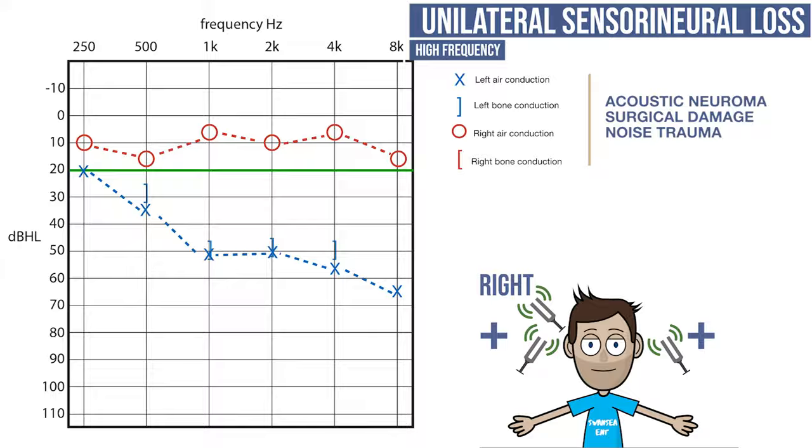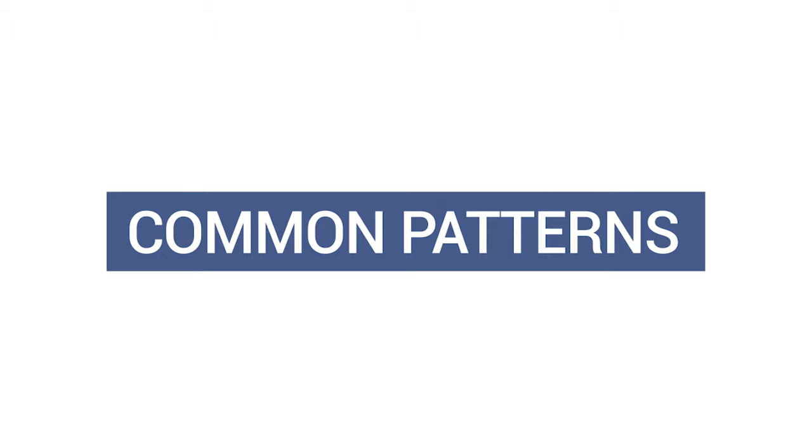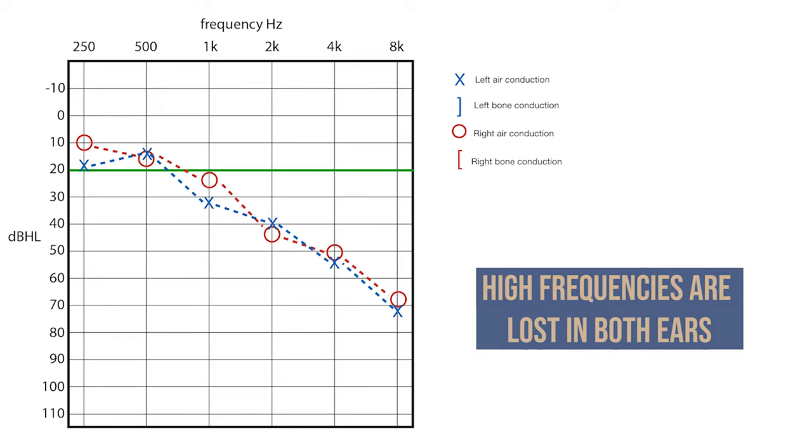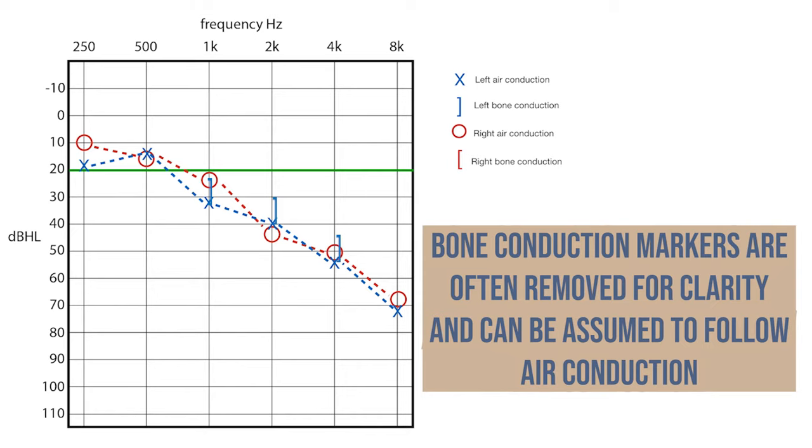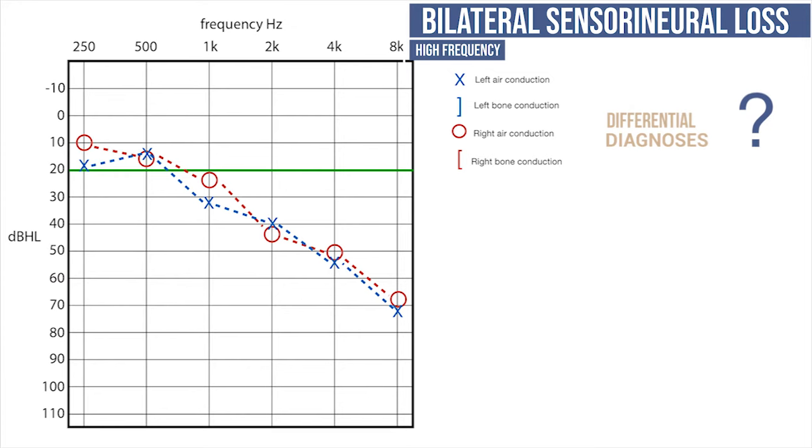Let's look at some common conditions and their audiograms, which you may be asked to interpret either on the wards, in clinics or during exams. This audiogram shows bilateral high frequency hearing loss. It is worth noting here that if bone conduction follows the same pattern as air conduction, it is often not displayed on the audiogram simply to make it more legible. Therefore, this is a sensorineural hearing loss and is typical of presbyacusis, or hearing loss of old age.